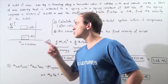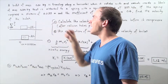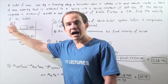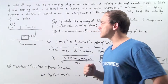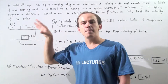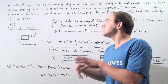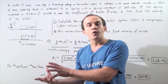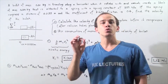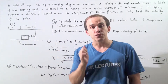We have our object, the bullet, traveling towards the block with mass 0.99 kilograms at some unknown velocity that we want to find. When the bullet collides and embeds inside the block, the block gains kinetic energy. That kinetic energy is then transformed into elastic potential energy compressing the spring, and also into thermal energy of the block and the ground due to friction.